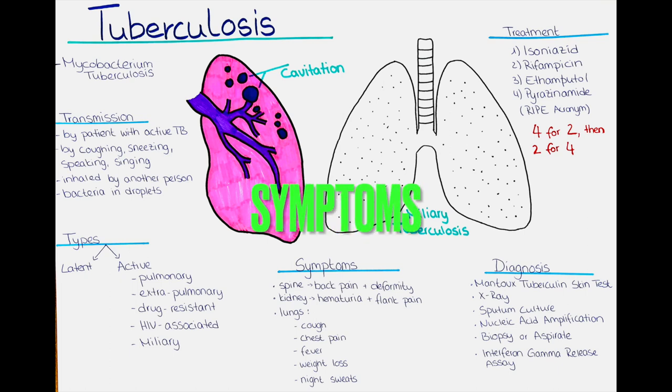So what are the symptoms of tuberculosis? The symptoms can vary depending on which organ is affected. Tuberculosis of the spine can lead to back pain and deformity, while tuberculosis of the kidney can lead to hematuria and flank pain. Most commonly the lungs are involved, and for this form the symptoms can be nonspecific and vary depending on the severity of the disease. Some common symptoms include a persistent cough lasting over two weeks, often bloody, and shortness of breath.